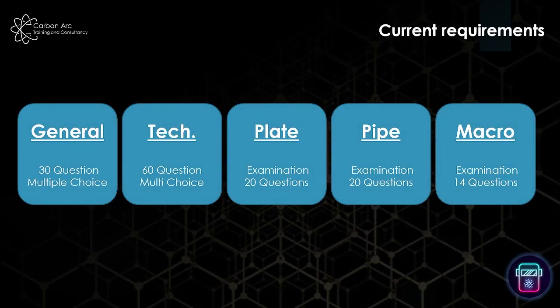As it stands up till April this year, the 3.1 is broken into five different parts. We've got a general, which is 30 multiple choice questions covering a bit of everything from weld failures to general welding technology. The technology paper is 60 questions and is intended to be more in-depth than the general — this is where we get questions around hydrogen cracking, solidification cracking, laminar tearing and the like.